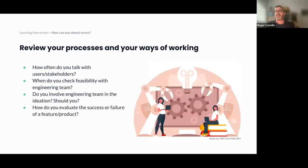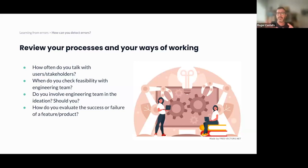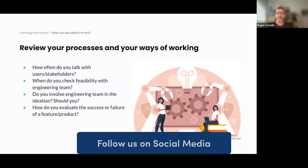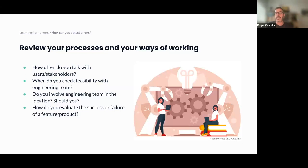Another important one: review your processes and ways of working. As a product manager, you work with several actors — UX, engineering team, stakeholders, users, business. Review always your processes. How often do you talk with users and stakeholders? When do you check feasibility with the engineering team? In which phase are you just telling them what to do? Are they engaged? Do you involve them in decisions? Is your team mature enough? Do they know enough about the user? How do you relate the success or failure of a feature or product? Review your ways of working and try to detect what you could improve.